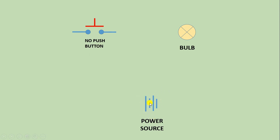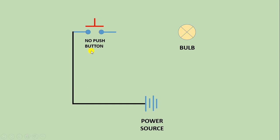With the positive terminal of this battery, connect one wire and provide input power supply to the push button. You can see that the wire is not complete here. So the positive power supply of the battery will remain until this terminal. If you want the power supply to reach from this point to the other point, then you have to press this push button.